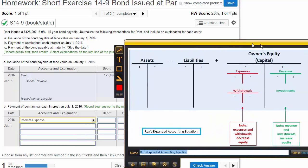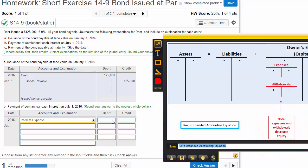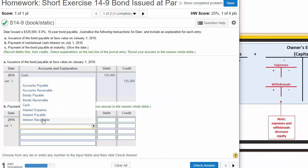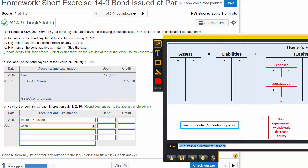Since interest expense is going up, and expenses go up on the debit side, that will be our debit, and cash will be going down. Now we need to know how to calculate the interest.